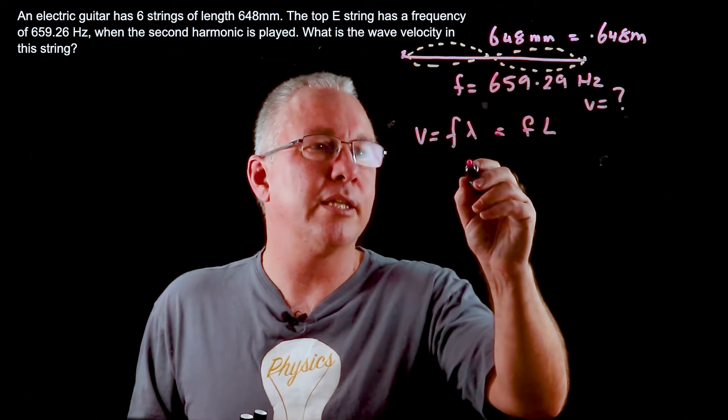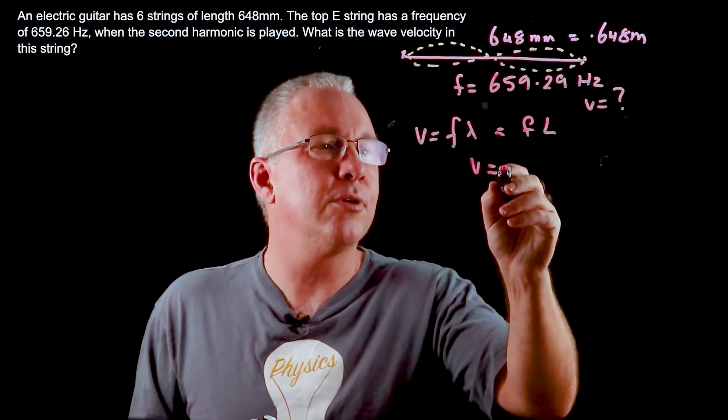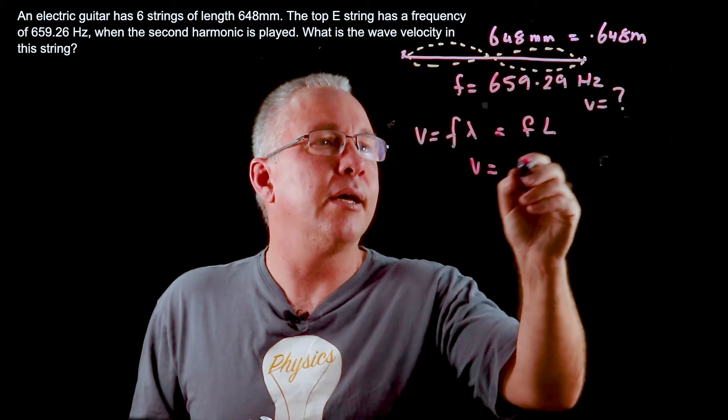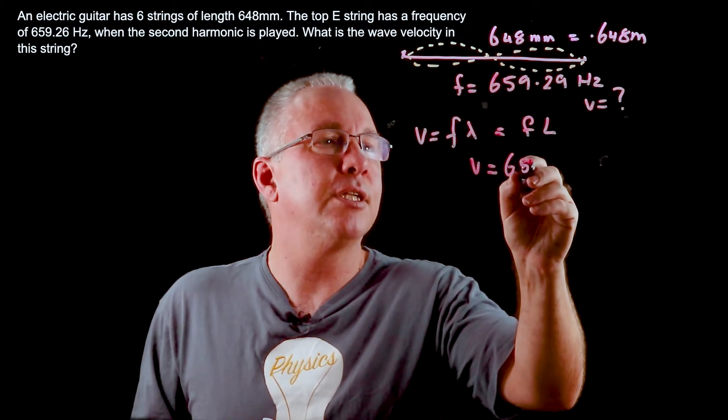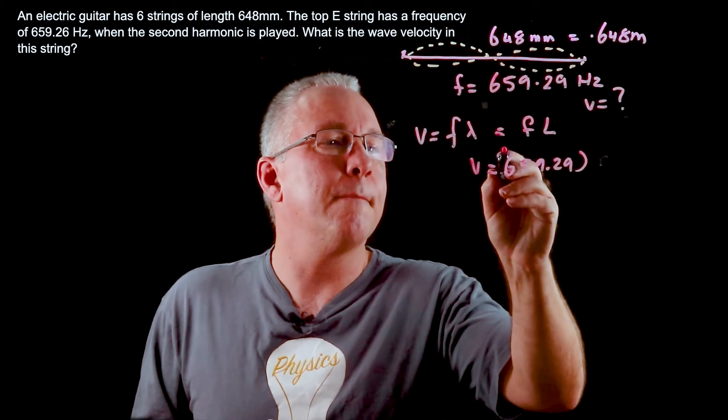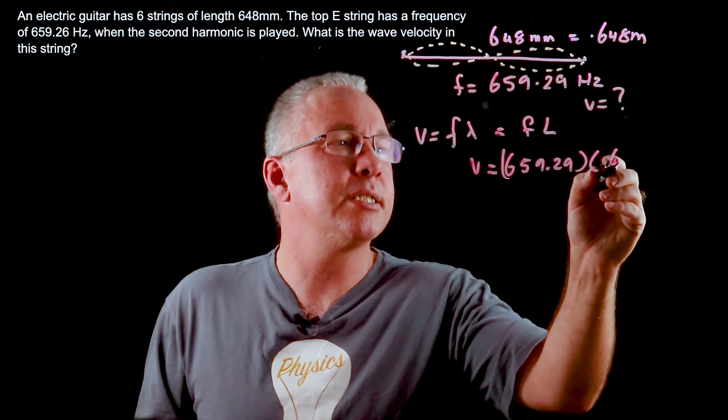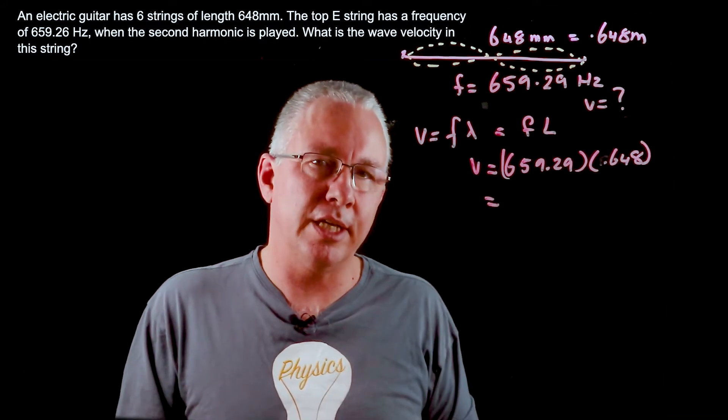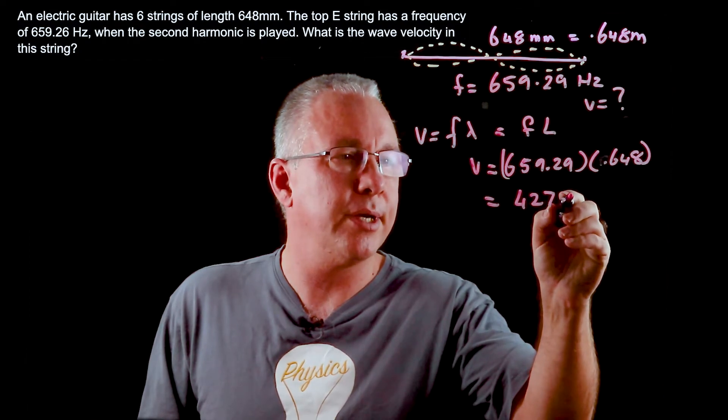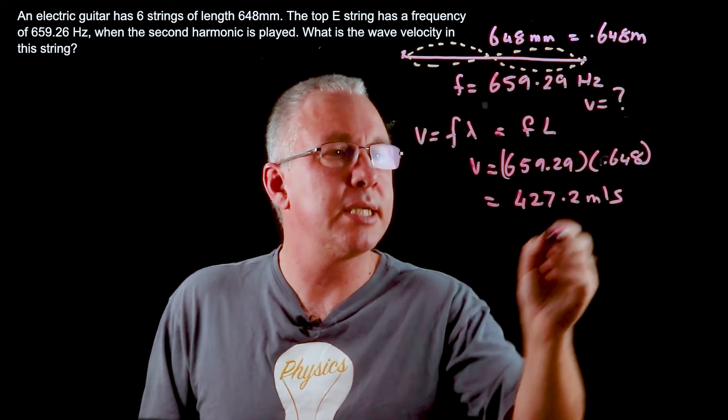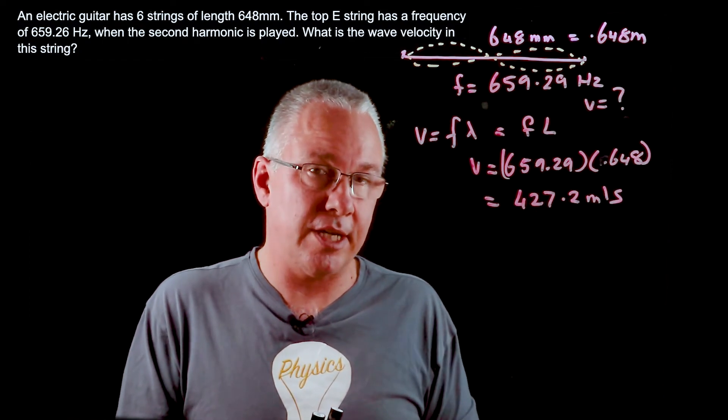Now you can see I can work out the velocity relatively straightforward. It's equal to frequency, which is 659.29, multiplied by my length, which is 0.648, and that's going to give me a grand total of 427.2 meters per second. That's relatively straightforward.